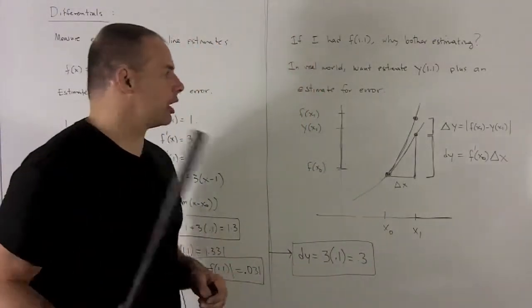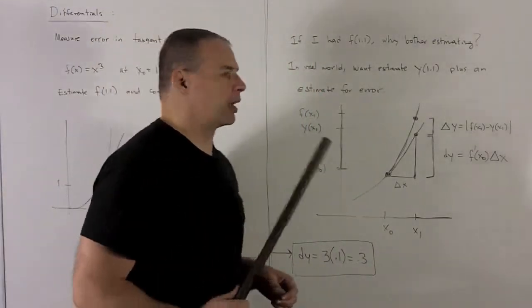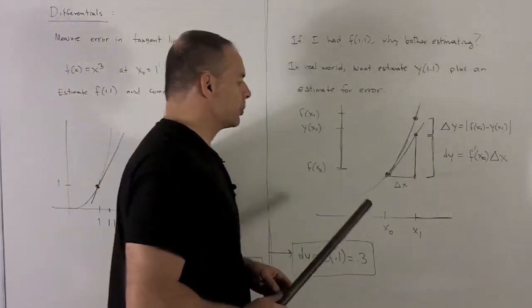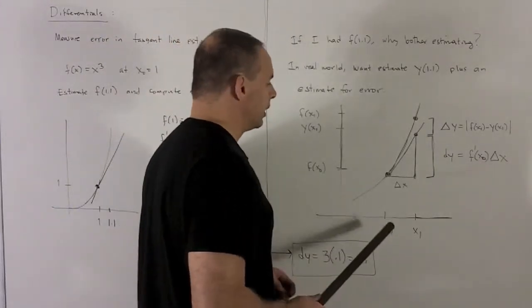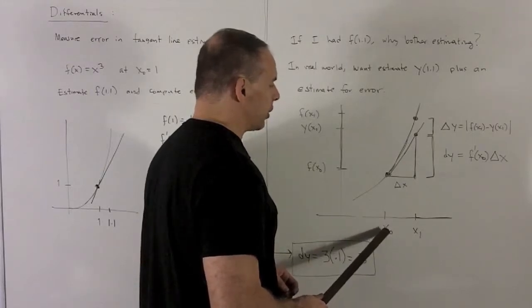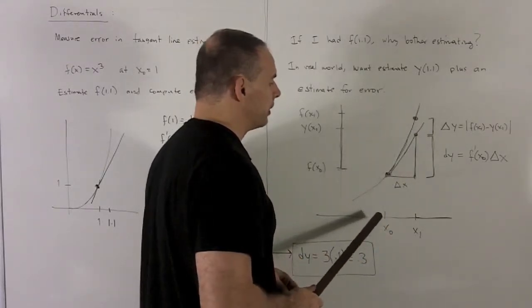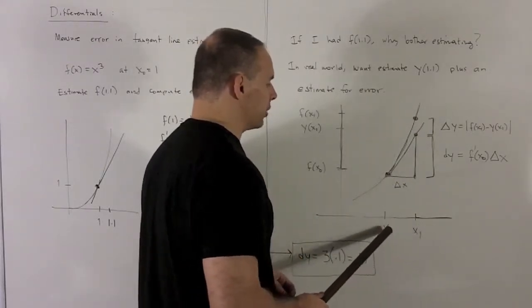So let's take a look at the picture. A little bit more abstract than this one. I want to be able to write things down. So let's suppose my function f, I have a point x0 where I'm taking the tangent line at. We're going to have a point x1 which is very close to x0.